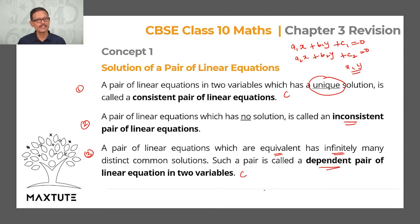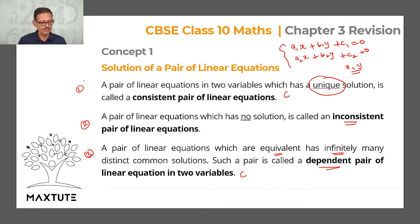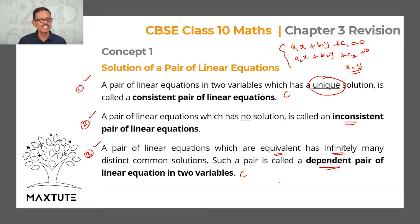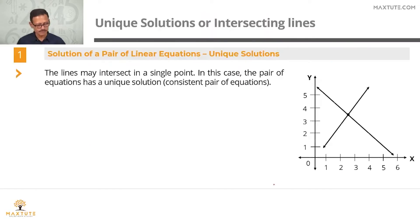We are going to take these two equations and check what the condition is for each situation — unique solution, no solution, and infinitely many solutions — and also examine what each means graphically.